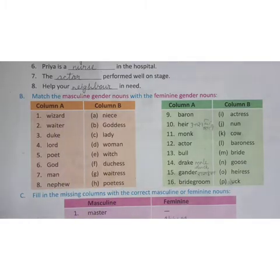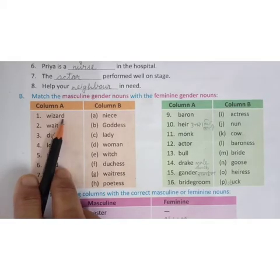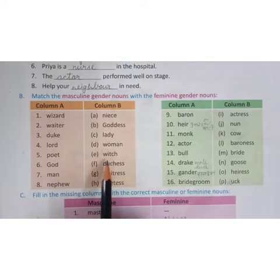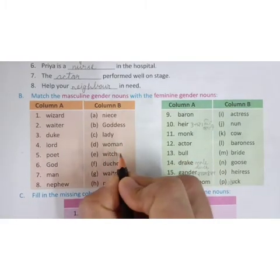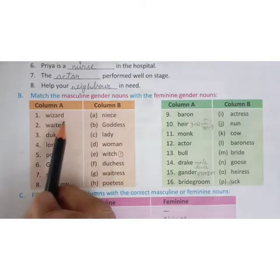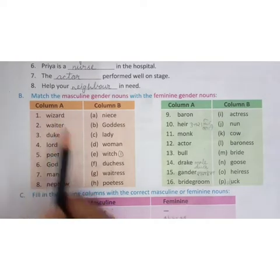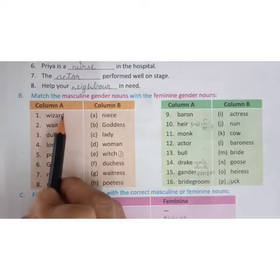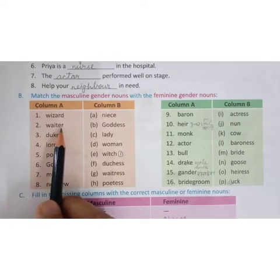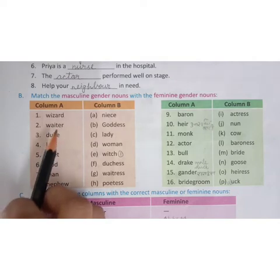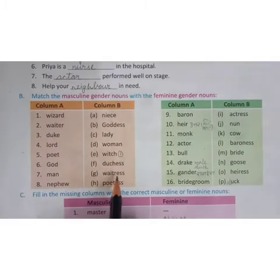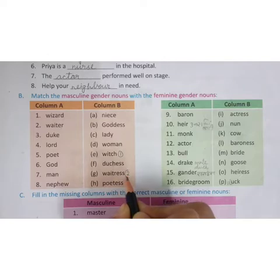First word is wizard. Wizard means jadugar, which is masculine gender. You will put a scale here and match the word to its correct feminine gender. Second word is waiter. When you go to a restaurant, you will see waiters there. The feminine gender is waitress. So this is the second answer.